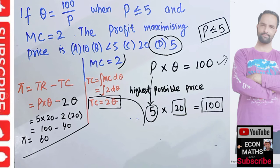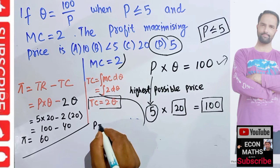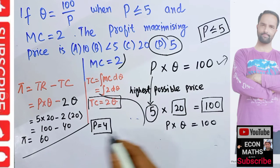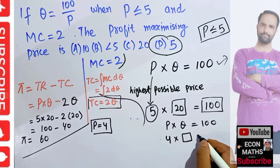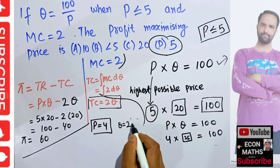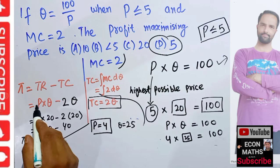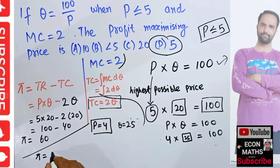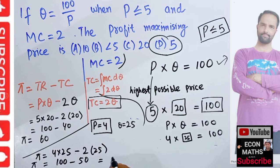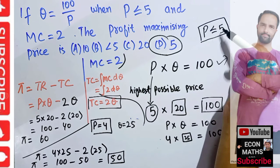Now let us take another value — a price less than $5, say P equals $4. Then P times Q equals 100 means 4 times Q equals 100, so Q equals 25. Profit equals P times Q minus 2Q, which is (4 × 25) minus (2 × 25). That is 100 minus 50, giving profit equals 50.